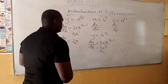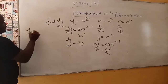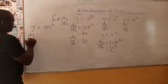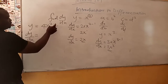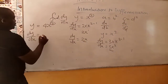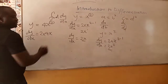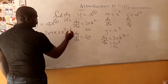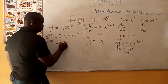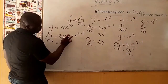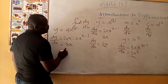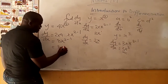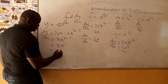Now, if I give you y is equal to 4x squared, then dy over dx is equal to: you look at the power, multiply the power by the coefficient, giving you 2 times 4x raised to x squared minus 1. So 2 times 4 gives you 8, and x squared minus 1 is x to the power 1, giving you 8x, which is the same thing as 8x.